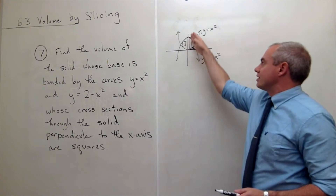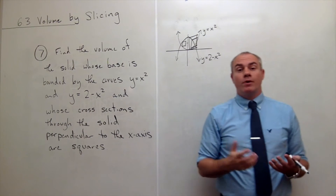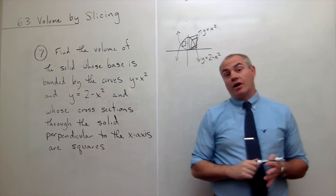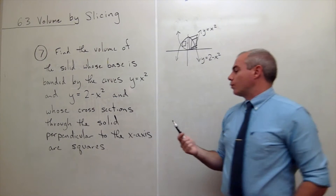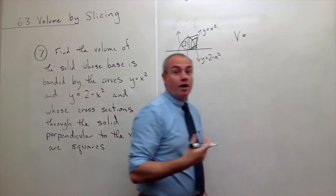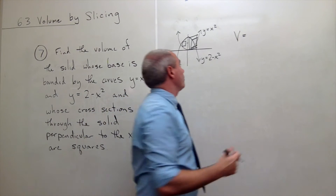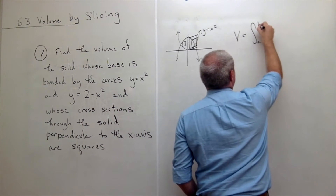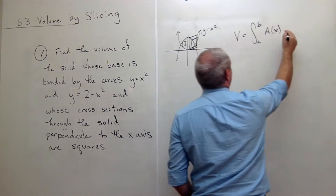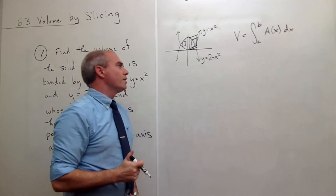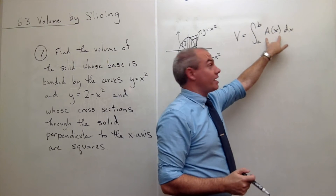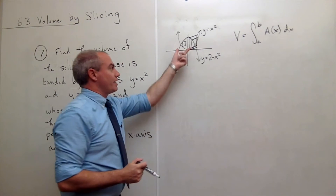We want to find the volume of the shape sitting over that region. To do this, we use the formula: volume equals the integral from a to b of the cross-sectional area function dx. We need to know what we're integrating from and to, what the area of each cross-section is, and we're integrating with respect to x.